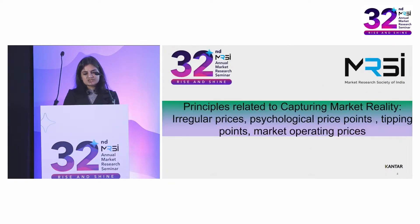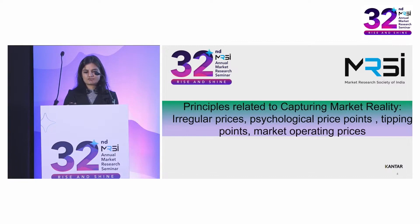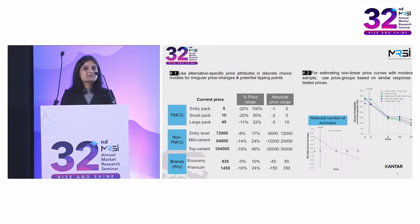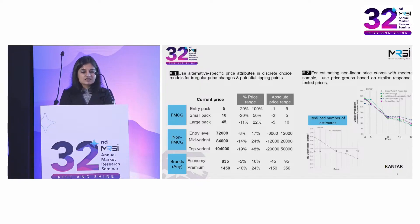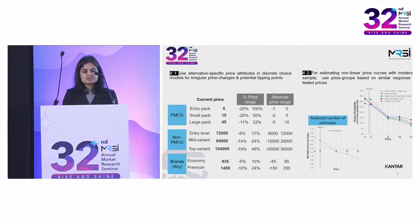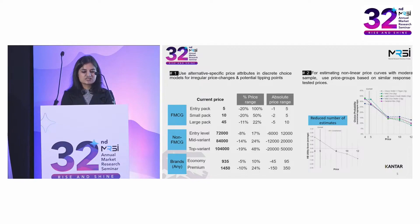We first begin with the principles related to capturing market reality in terms of irregular prices, psychological price points, tipping points, and market operating prices. In real market, the amount of price change that businesses can absorb usually differs by SKUs — be it the pack size in FMCG, the model variance in non-FMCG, or value versus premium brands in any category. There are also realities like psychological price points and market operating prices, which should ideally be tested with consumers in the survey itself. The generalizable solution here would cover both regular and irregular price gaps, and for this it is best to utilize alternative-specific price attributes in discrete choice design and models.